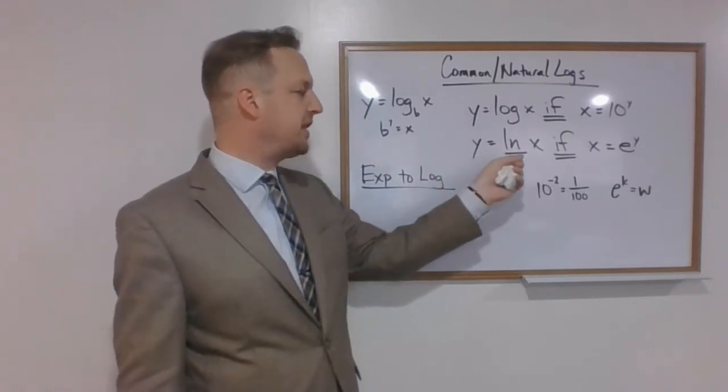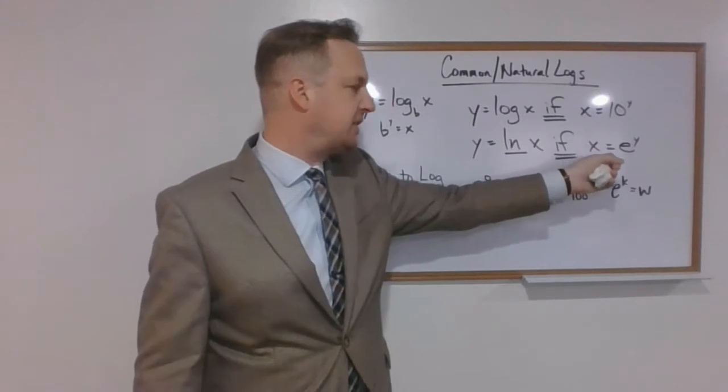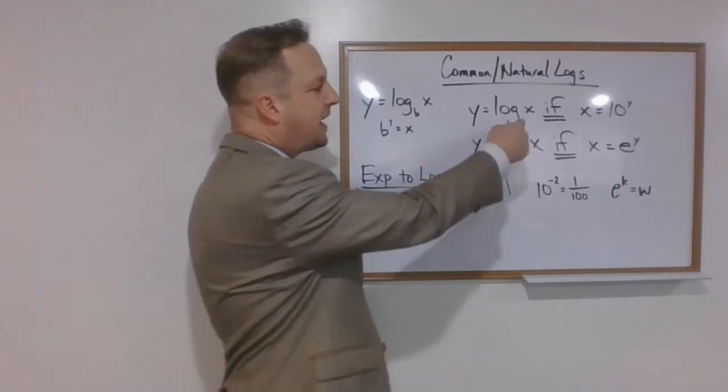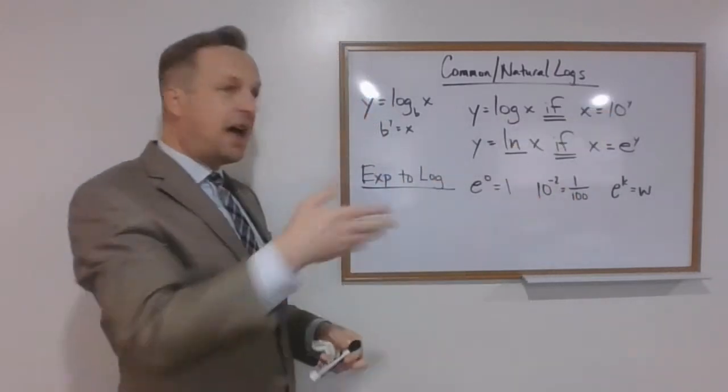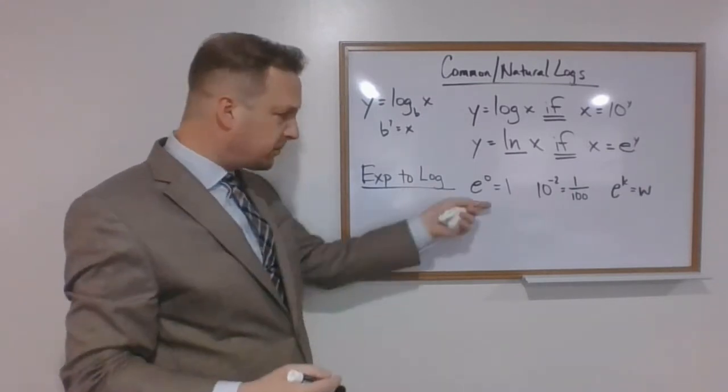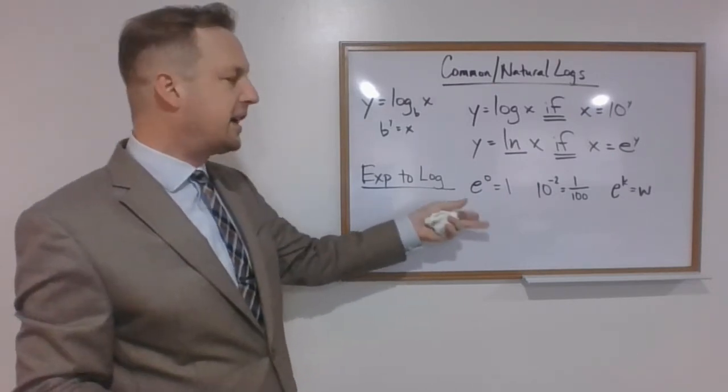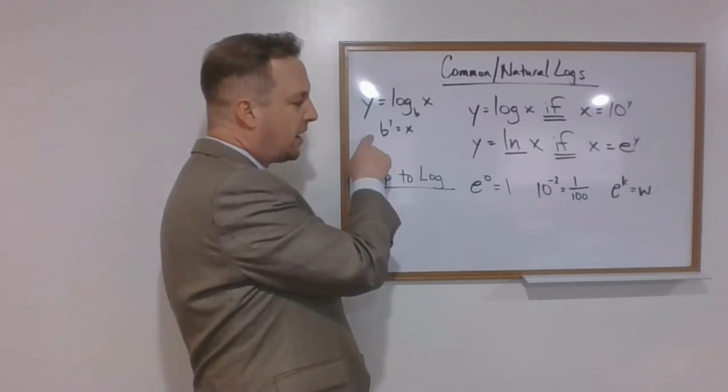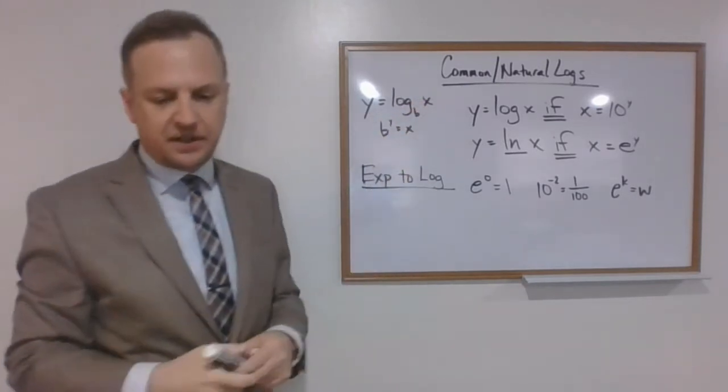Notice that there's no base here. If you see log of a value x and there's no base, generally you should assume that base is 10. So you can use that to do your problem. So the rule for the common log is that y equals log of x without a base if x equals 10 to the y. In other words, if 10 can be assumed to be the base.